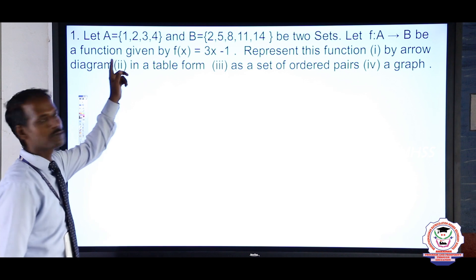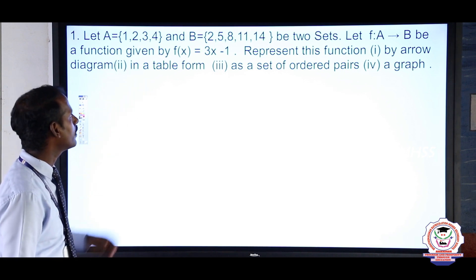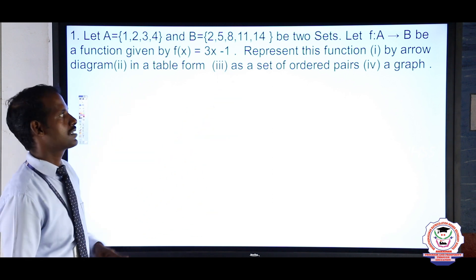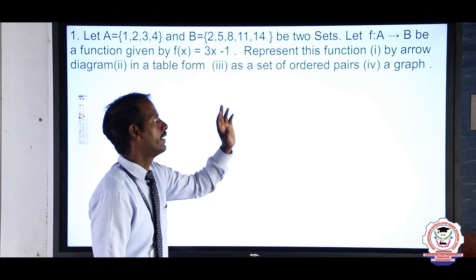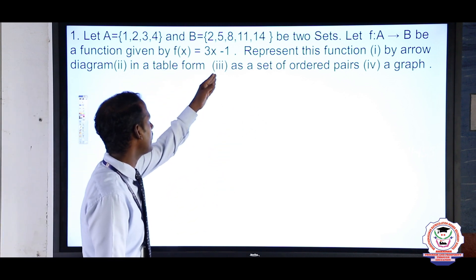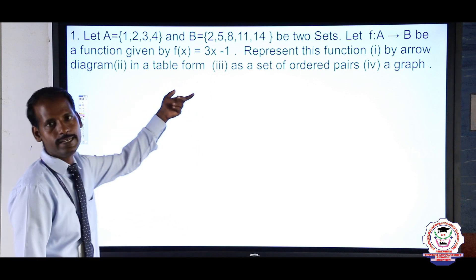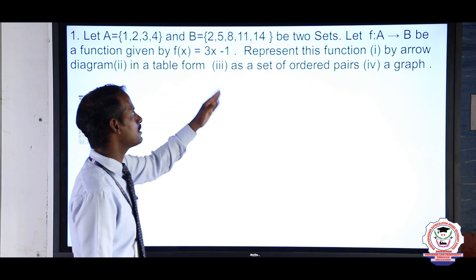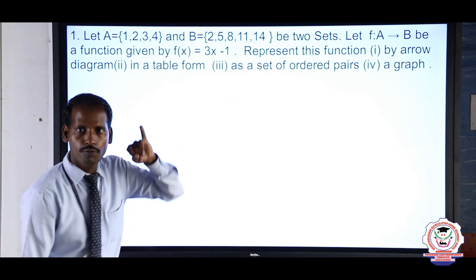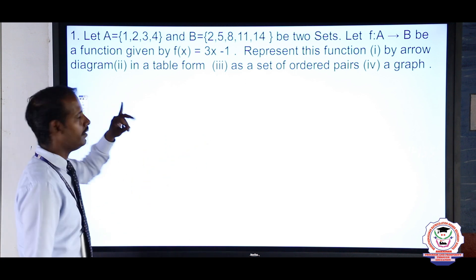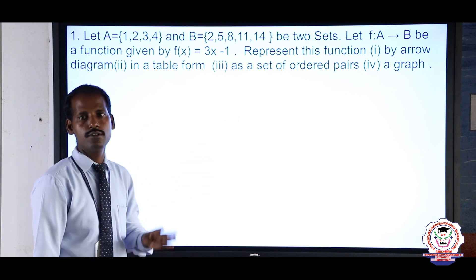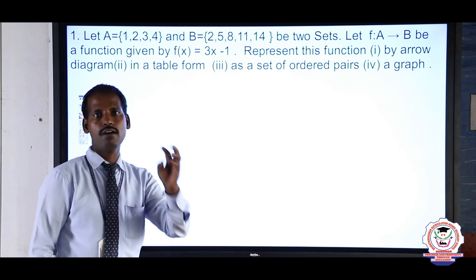For this sum, let A set be {1, 2, 3, 4} and B set be {2, 5, 8, 11, 14} — these are two sets. The function F: A → B is given by f(x) = 3x − 1. We have to represent this function by: first, arrow diagram; second, table form; third, set of ordered pairs; and fourth, graph.